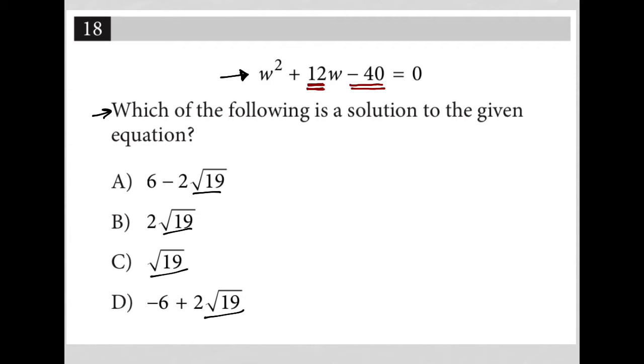So are there two numbers that multiply to equal negative 40 but add up to positive 12? But if I see a radical here, it actually means that I shouldn't go about it in that way. It really means that I should use the quadratic formula in order to solve this.